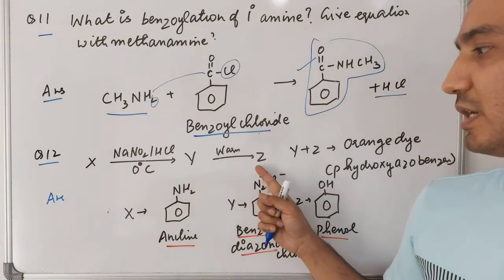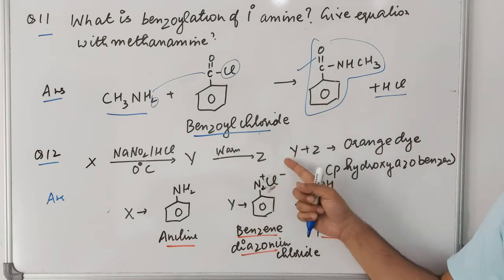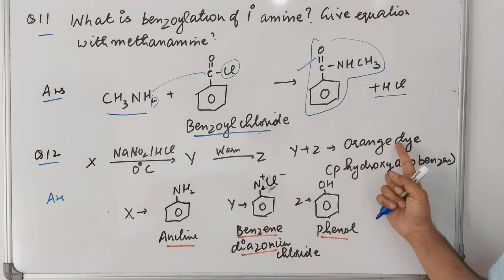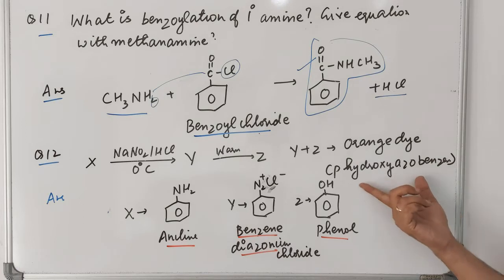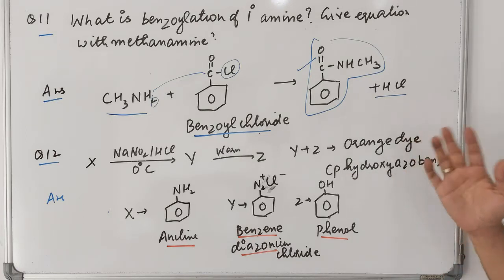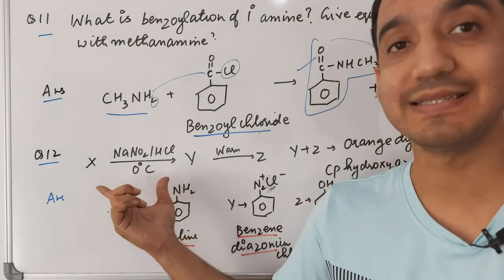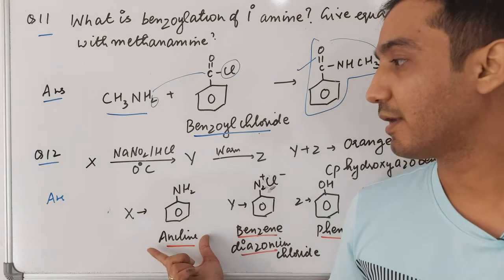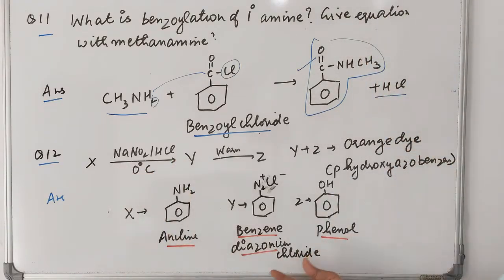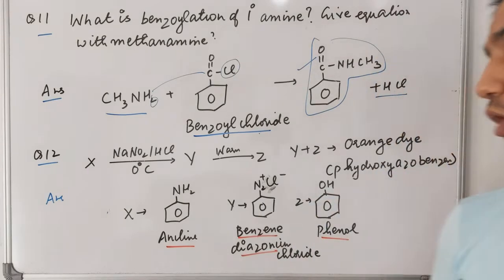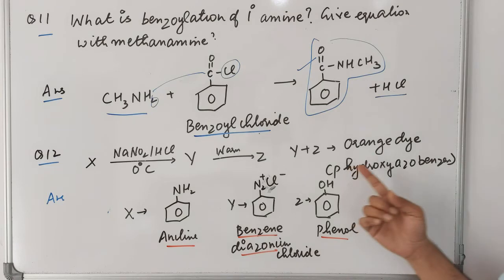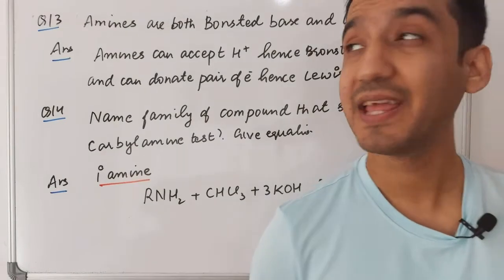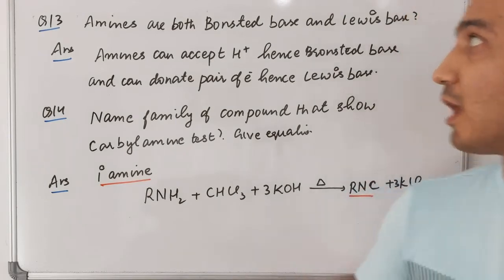Question twelve: X reacts with NaNO₂/HCl at 0°C to form Y (benzene diazonium salt); Y on warming forms Z (phenol); Z and Y react to form an orange dye called para-hydroxyazobenzene. The first reaction is Sandmeyer's reaction where aniline reacts with NaNO₂/HCl to form benzene diazonium salt. On warming, it forms phenol. Phenol and benzene diazonium chloride undergo coupling to give the orange dye para-hydroxyazobenzene.